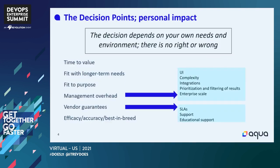The point of all of this is really decision points — figuring out what the decision points are for your own situation moving forward. The key points are the ones that have a personal impact for you and your team. There's no right or wrong. The decision can flip back and forth. There are very established companies using open source, and established companies using commercial. It goes both ways.